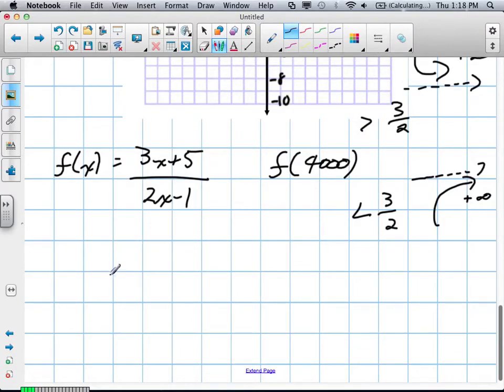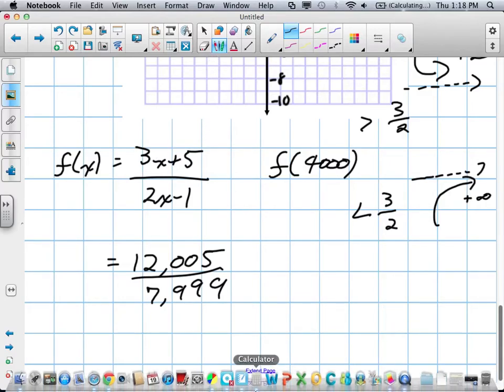So I plug in positive 4,000. What's that? 12,005. Divided by 7,999. What do we get on a calculator here?